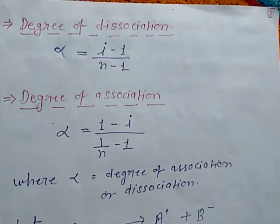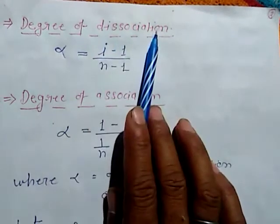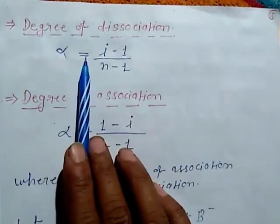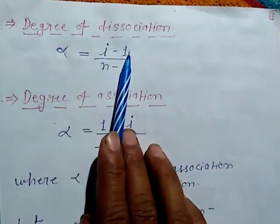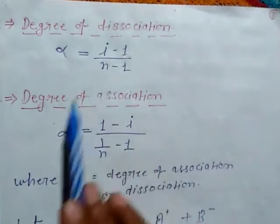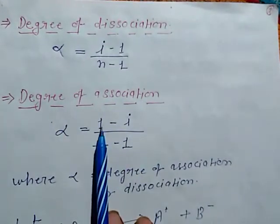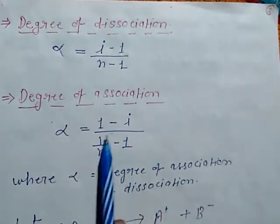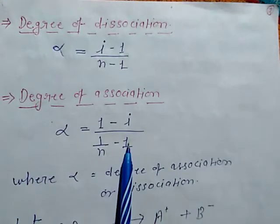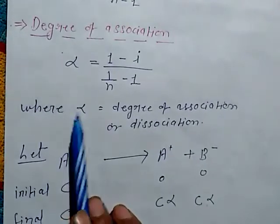The degree of dissociation is given by: α = (i − 1) / (n − 1). The degree of association is given by: α = (1 − i) / (1 − 1/n), where α is the degree of association or dissociation.